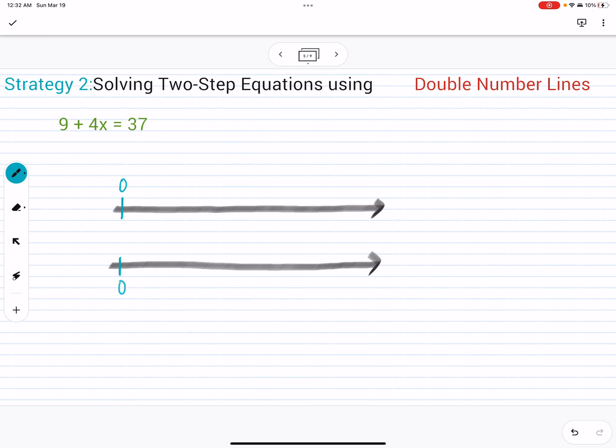Keep in mind, we're keeping those lines equal because the top represents the bottom. The top is equal to the bottom.